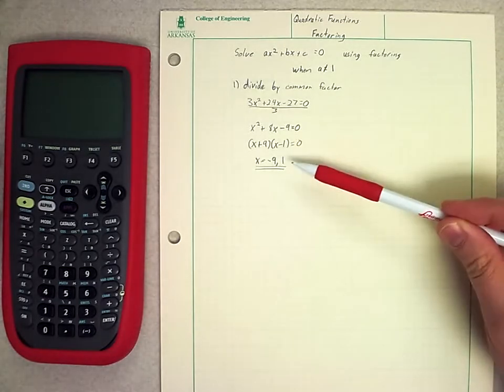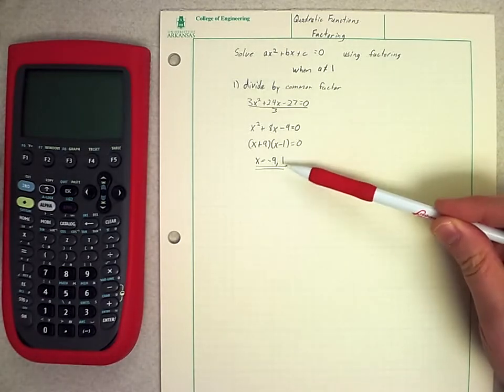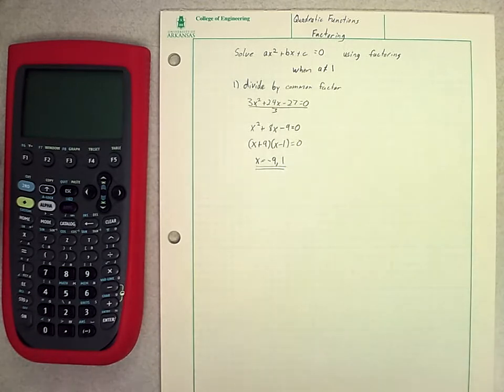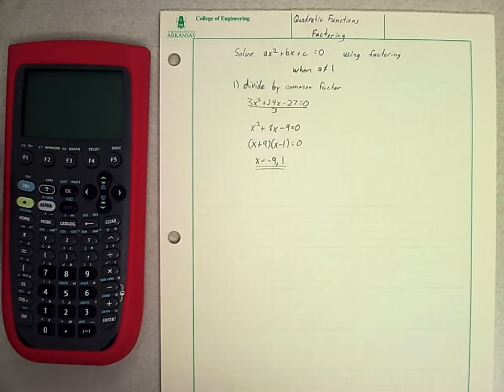I factor that into (x + 9)(x - 1) = 0, which gives me that my solutions are either x = -9 or x = 1. Dividing by the common factor can make the problem much more simple.